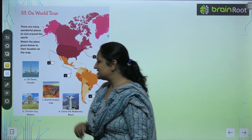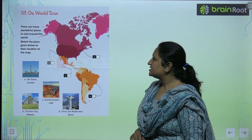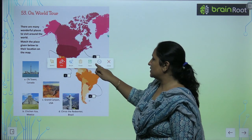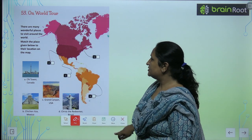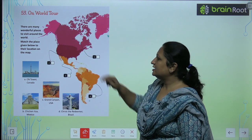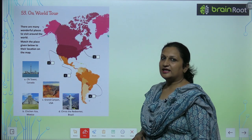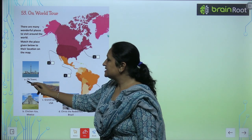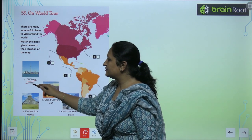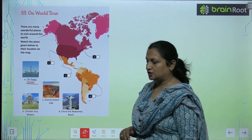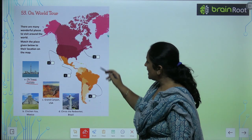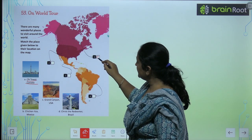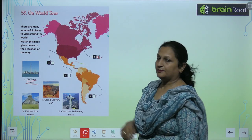So let's get started. See the first one. The first one belongs here — CN Tower, Canada. So you will write A here.